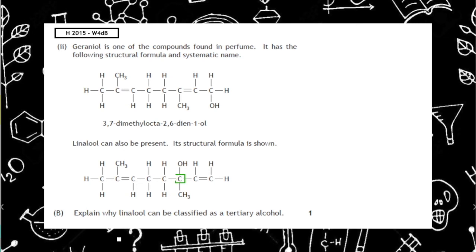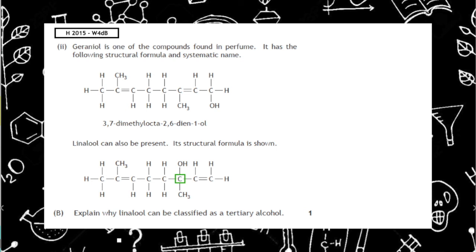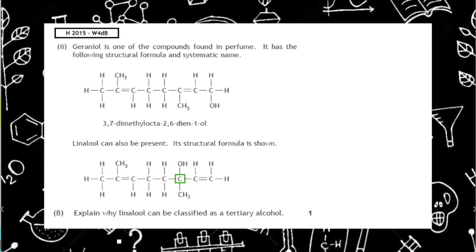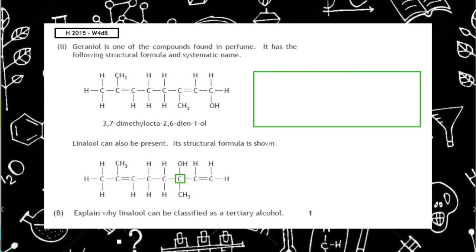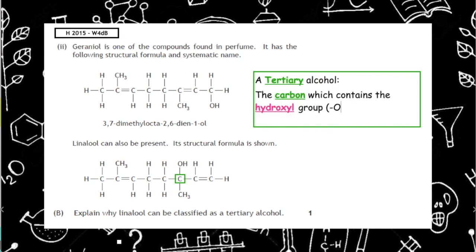This past paper question is from the Higher 2015 written paper question 4(b): explain why this alcohol can be classed as a tertiary alcohol. Based on our definitions, we need to look at the carbon which contains the hydroxyl group — that carbon is bonded to three other carbon atoms, so it's classed as a tertiary alcohol.